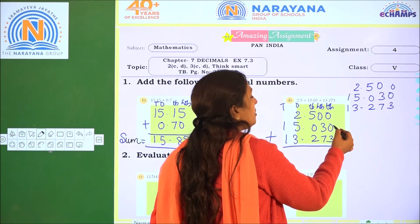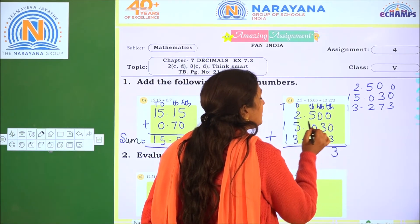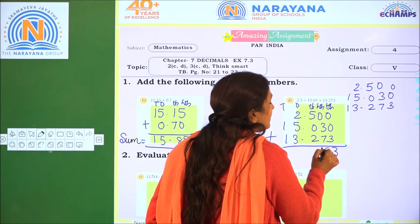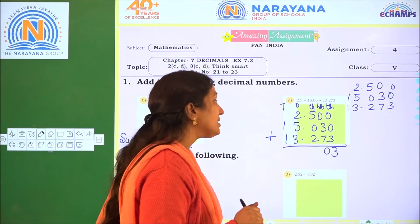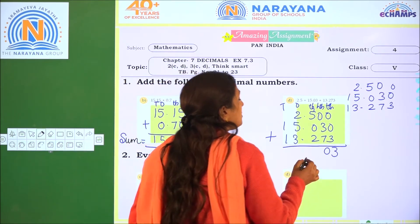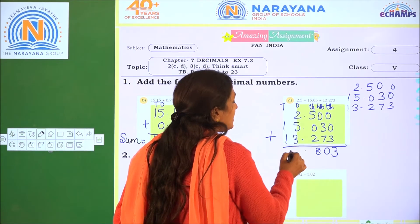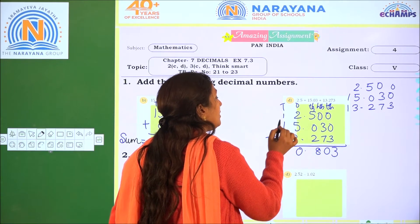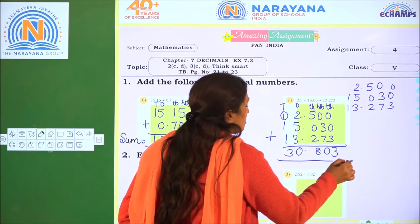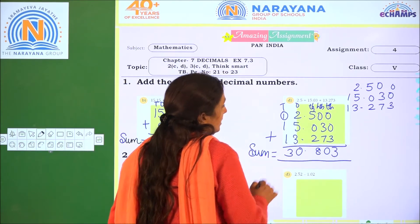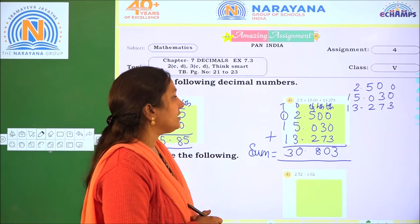Now add: 0 plus 0 plus 3 is 3. 0 plus 3 is 3. 3 plus 7 is 10 — write 0 and regroup 1. 1 plus 5 is 6, 6 plus 0 is 6, 6 plus 2 is 8. 2 plus 5 is 7, 7 plus 3 is 10. So the sum is 30.803.